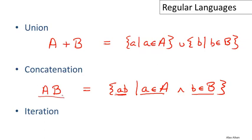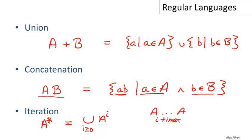And finally, there's a kind of looping construct. This is pronounced A-star, or it's called the Kleene iteration or Kleene closure. A-star is equal to the union for I greater than or equal to zero of A to the I. A to the Ith power is just A concatenated with itself I times. Because I can be equal to zero, one of the possibilities is A to the zero — A concatenated with itself zero times — which is the language epsilon, the language containing the empty string. So the empty string is always an element of A-star.